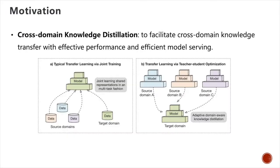There are generally two types of methods to deal with the requirements of abundant data for building real-world applications. First, we can leverage transfer learning to learn knowledge from multiple domains to help the target domain. Second, we can use a knowledge distillation method to distill knowledge from a large pre-trained model to a small student model to facilitate fast online serving. In this study, we seek to combine these two types of methods to facilitate cross-domain knowledge transfer with effective performance and efficient model serving. The key idea is to distill knowledge from multiple domain teachers to a small target model, so the target model learns cross-domain knowledge to improve its performance while remaining small and efficient.